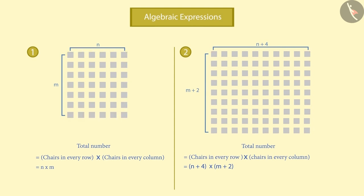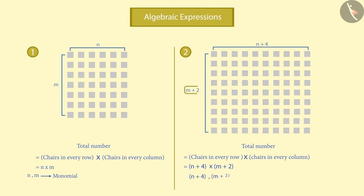In both cases, we multiplied two algebraic expressions. In the first situation, the expressions N and M were multiplied — N and M are two monomials. In the second situation, the expressions N plus 4 and M plus 2 were multiplied — N plus 4 and M plus 2 are two binomials.